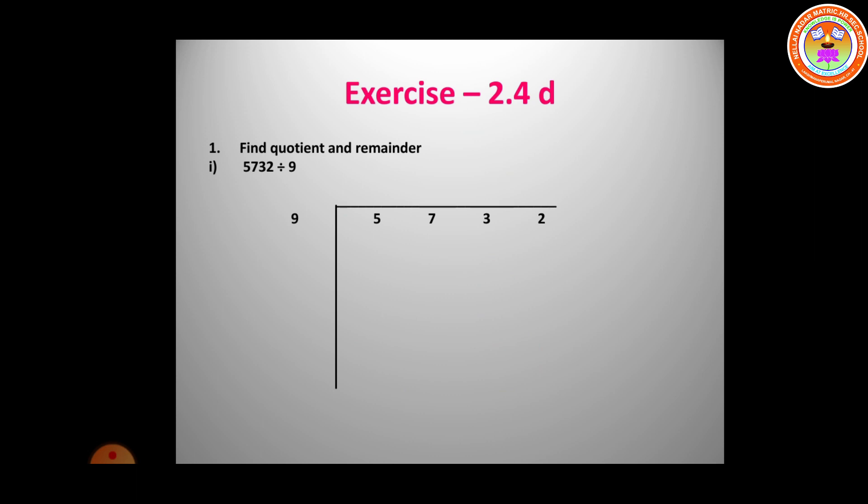In the nine times table, we check where 57 comes or just less than 57. Six 9's are 54, so the remainder is 3 (57 minus 54 = 3). Bring the next number down — it becomes 33.